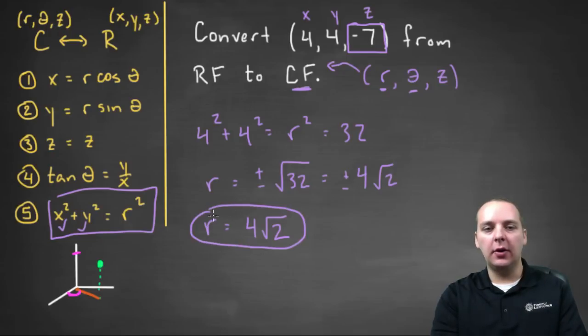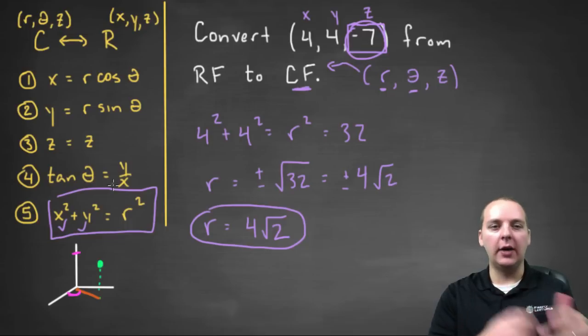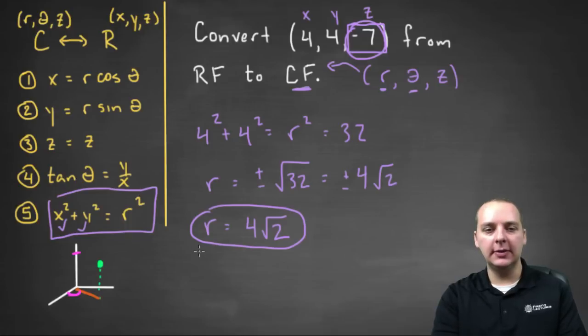So I've got the R, here's the Z, all that's left is the theta. So let's see, I'm thinking probably number four, tan theta equals Y over X. We could do a little algebra and figure out what theta is. So for that we'd have tan theta equals Y over X, four over four, which would be one. So tan theta equals one. So theta would be arc tan of one.